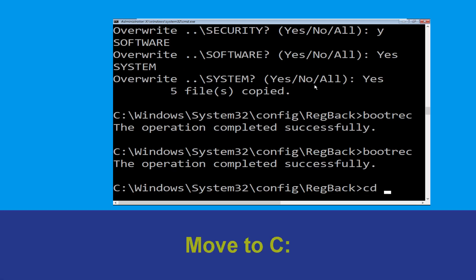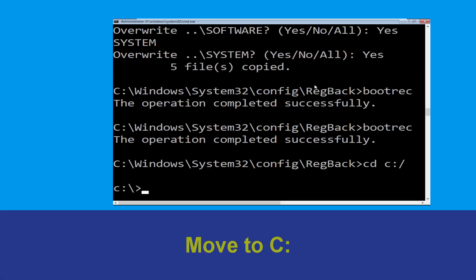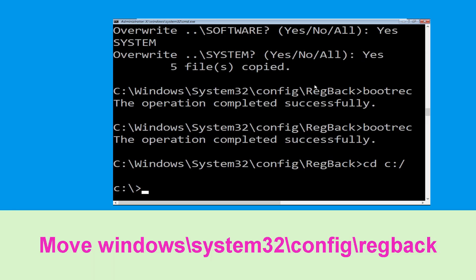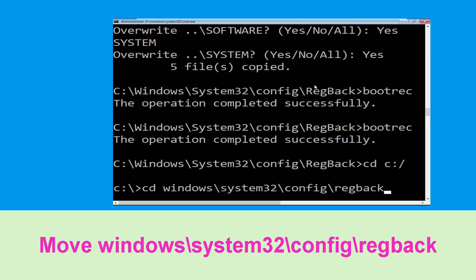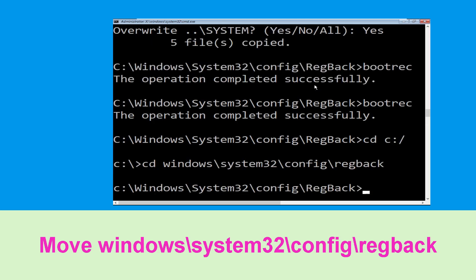Type cd c:\ and hit Enter. Now type this command: cd windows\system32\config\regback and simply hit Enter to execute the command.